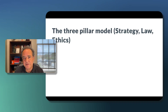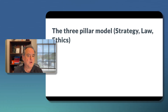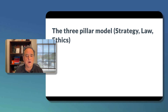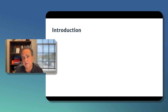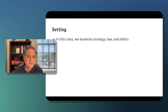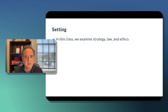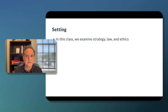Hi. In this lecture, we're going to look at an ethical framework referred to as the three-pillar model. The three-pillar model is composed of strategy, law, and ethics. In this class, we are going to examine these three dimensions of business: strategy, law, and ethics.